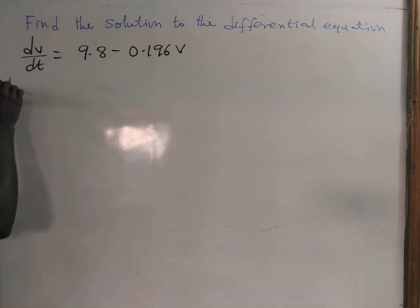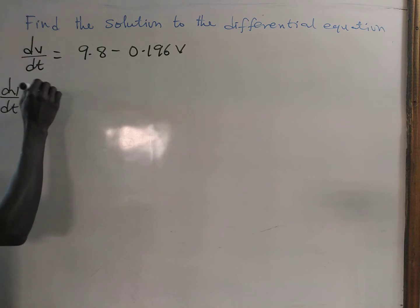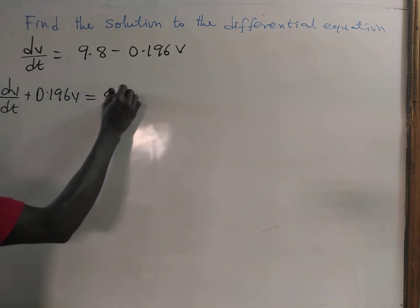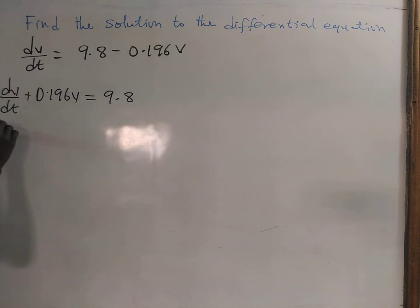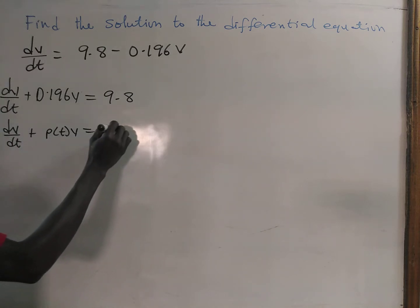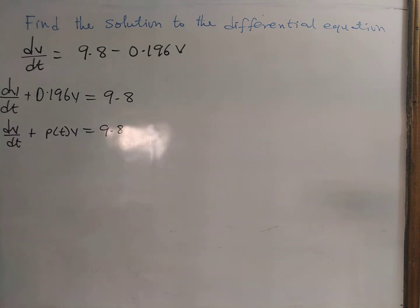We can write it in the form dv/dt plus 0.196v equals 9.8. This is in the form dv/dt plus p(t)v equals 9.8. This is a linear differential equation.